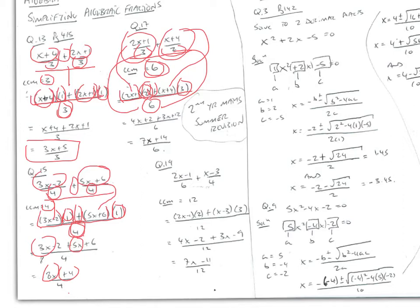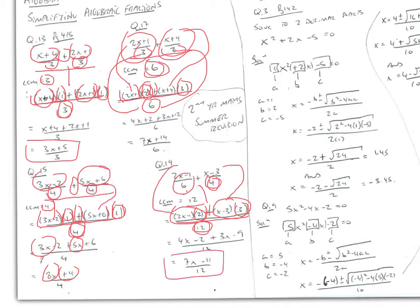Now: (2x-1)/6 + (x-3)/4. The lowest common multiple of 6 and 4 is 12. We draw our line with 12 underneath, two sets of brackets for each term with the plus sign in the middle. We write 2x-1 and x-3. 6 goes into 12 twice, 4 goes into 12 three times. Multiplying all out gives (7x-11)/12.